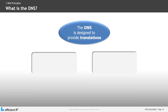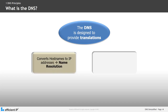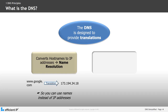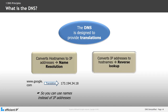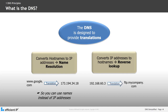DNS is designed to provide translations between host names and IP addresses. There are two types of translations. Type 1, where it converts host names to IP addresses, also called name resolution. For example, www.google.com typed into a browser was translated to 173.194.34.18. The second type converts IP addresses to host names — this is called reverse lookup. For example, 192.168.60.3 is translated into the name ftp.mycompany.com.